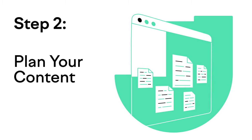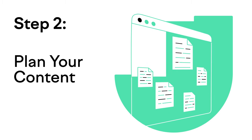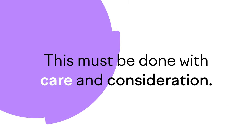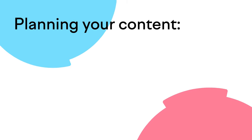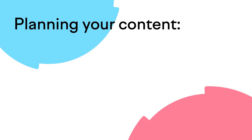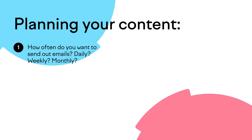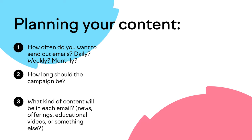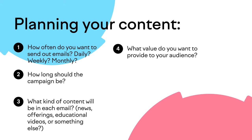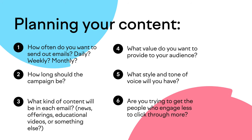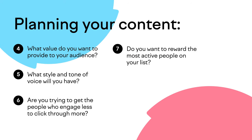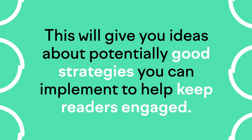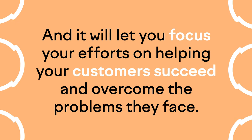Step two: plan your content. Now that you've defined your target audience, you'll need to plan your content. You'll need to create a plan with the intent to build a long-term relationship with your target audience. So when planning your content, refer back to your goals and then get to the bottom of these questions: How often do you want to send out emails — daily, weekly, monthly? How long should the campaign be? What kind of content will be in each email — news, offerings, educational videos, or something else? What value do you want to provide? What style and tone of voice will you have? Are you trying to get less-engaged people to click through more? Do you want to reward the most active people on your list? This will give you ideas about potentially good strategies to keep readers engaged and help your customers succeed.